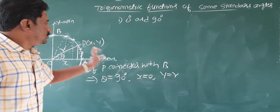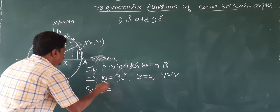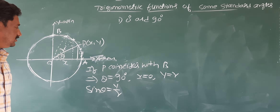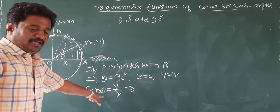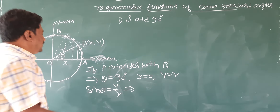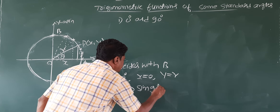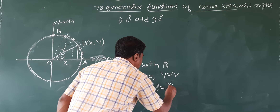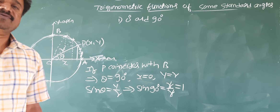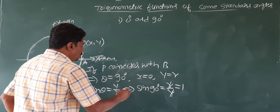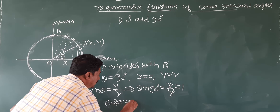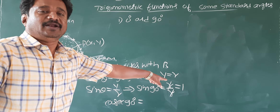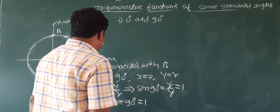Sine theta is y by R. If theta becomes 90 degree, y equals R. So sine 90 degree equals R by R, which is 1. Therefore sine 90 degree is 1. Reciprocal of sine is cosecant, so cosecant 90 degree is reciprocal of 1, which is 1.